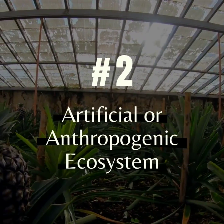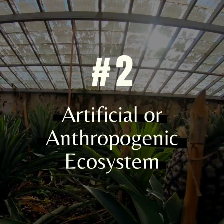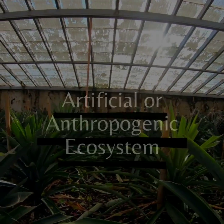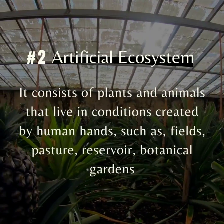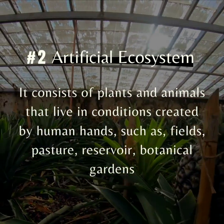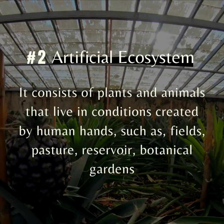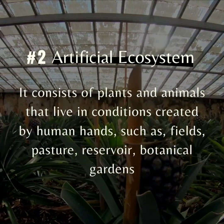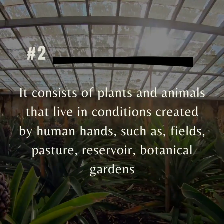Number 2, Artificial or Anthropogenic Ecosystem. It consists of plants and animals that live in conditions created by human hands, such as fields, pasture, reservoir, and botanical gardens.